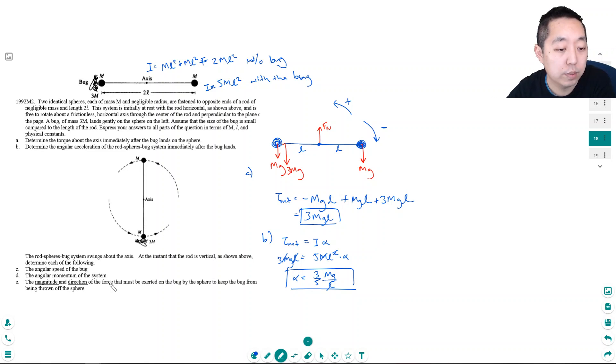For angular speed, I'm going to use conservation of energy, because the torque changes. This thing is not under constant torque.